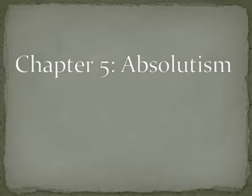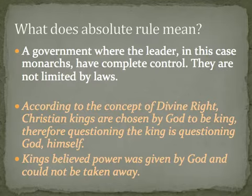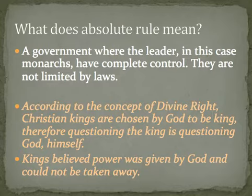Chapter five was all about absolutism. Absolute rule means a government where monarchs have complete control — they are not limited by laws. According to the concept established in Europe, the divine right of kings held that Christian kings were chosen by God, so if you questioned the king you were questioning God. Kings believed their power was given by God and could not be taken away or challenged.